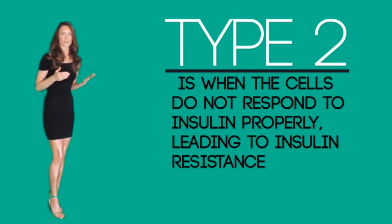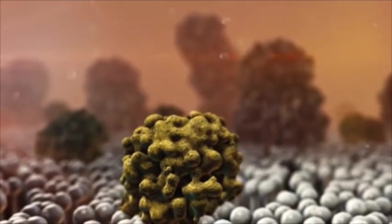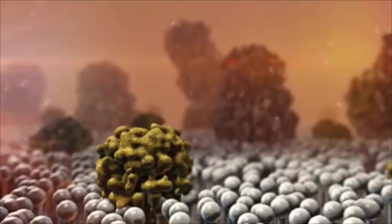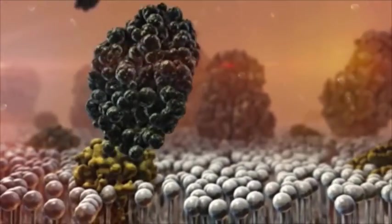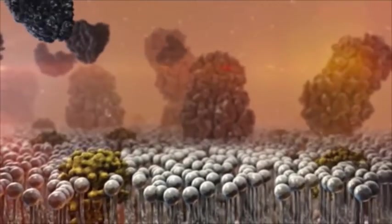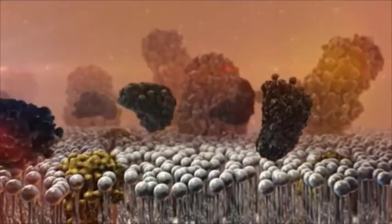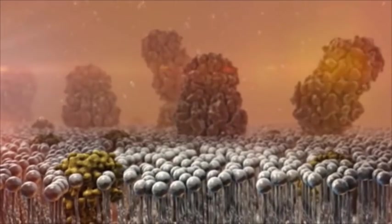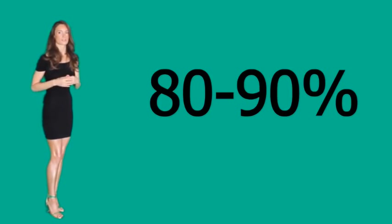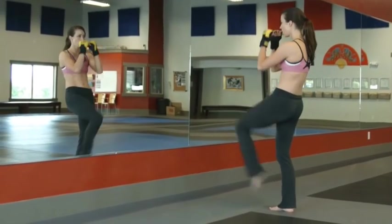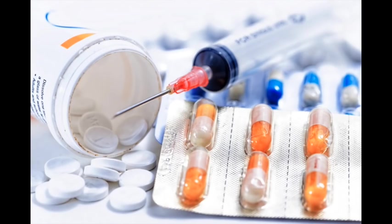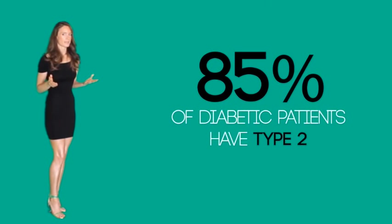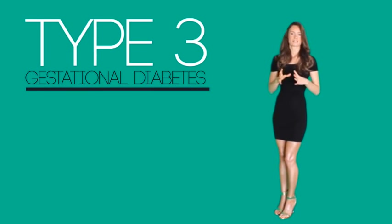Type 2 diabetes is when the cells do not respond to insulin properly, leading to insulin resistance. Sugar levels in the blood stay high, causing the pancreas to produce extra insulin to compensate, but cells continue developing further resistance and eventually the pancreas fails to produce sufficient insulin. This condition occurs in people older than 30 and is linked with obesity in 80 to 90 percent of cases. About 85 percent of diabetes patients have type 2.